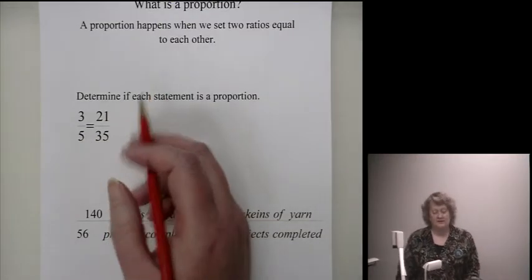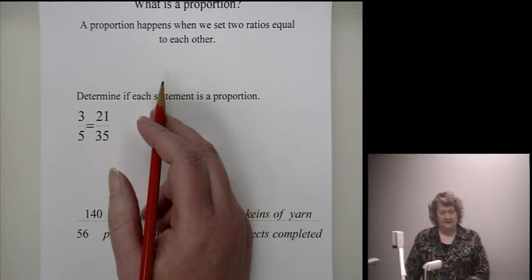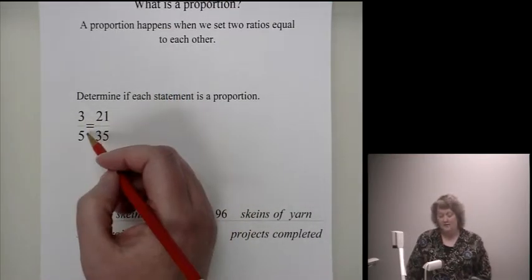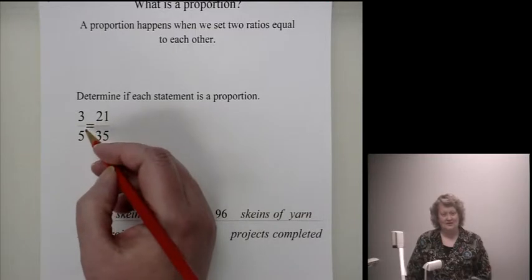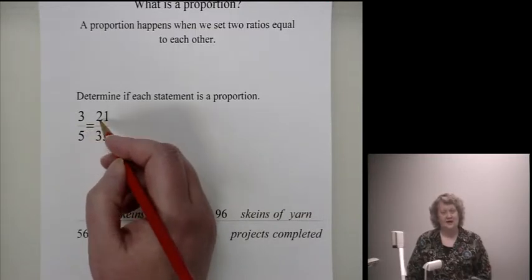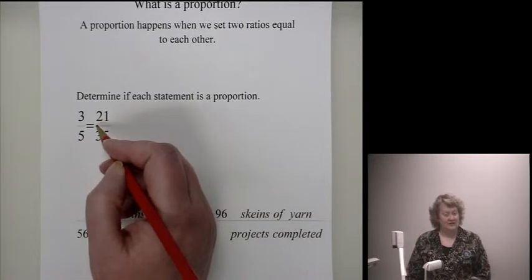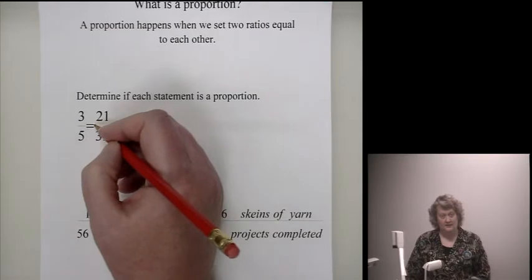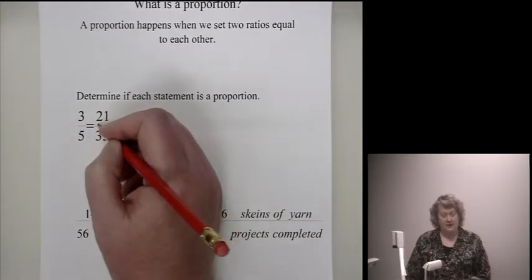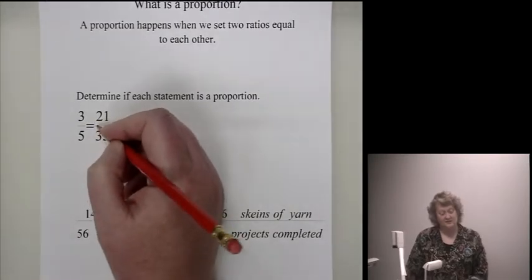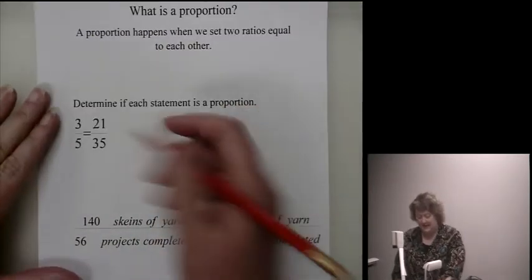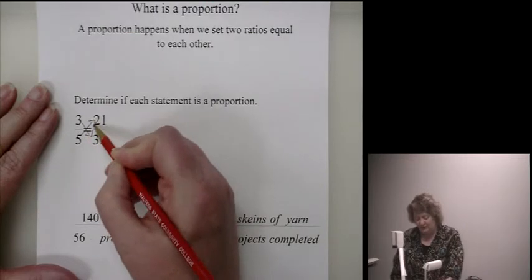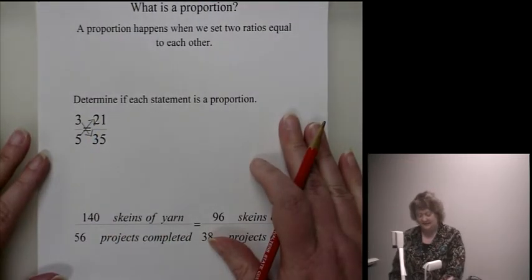Since we're going to set our ratios up as fractions in this section, one of the tools that we'll use is the fact that the cross products of equal fractions will be equal. In this case, that means that we're simply going to make a cross, multiply the numbers, and if those values are the same, then the proportion is the same. So we're going to multiply 3 times 35 and 5 times 21 and see if we get the same value.